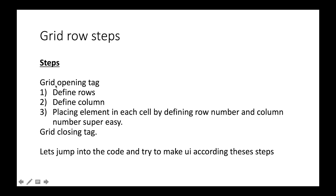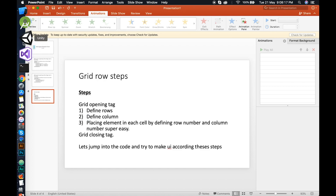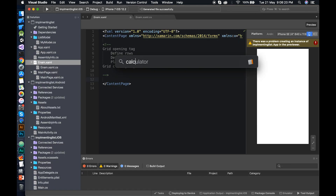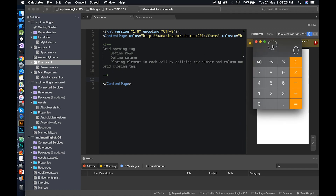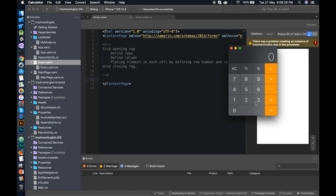Here are the steps to make a complete UI. First, add the grid opening tag. Then define the rows, then the columns. Finally, place each element by specifying which row and column it should go in. A calculator is a great example of a grid layout, so let's jump into the code and build one.